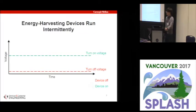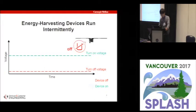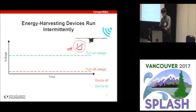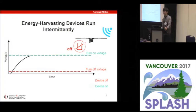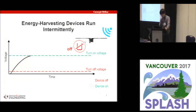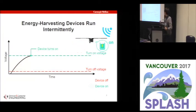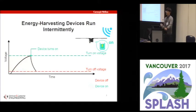One interesting thing about energy harvesting devices is that they run intermittently, only when there is available power, instead of running continuously. When the energy storage is empty, indicated by this red icon, the device is simply off. When there is energy to harvest, the device starts to harvest energy and slowly charges up its energy storage. During this charging period, the device is still off and no useful computation is going on. When there is enough energy, the device turns on, indicated by this green icon, and the device is now performing computation and rapidly consuming energy.